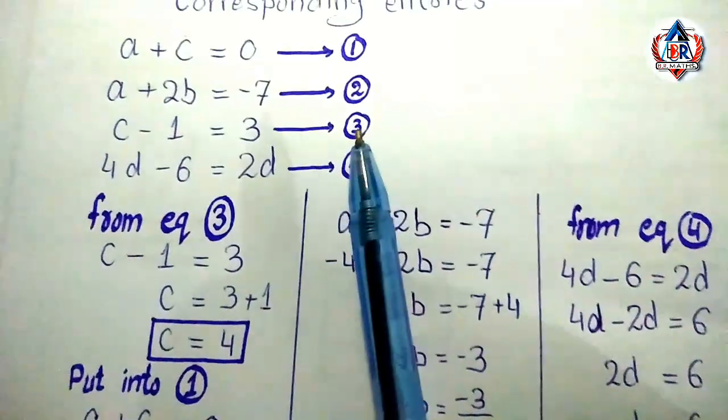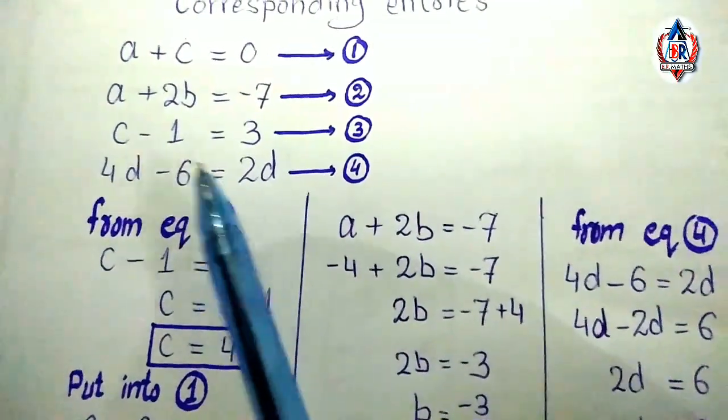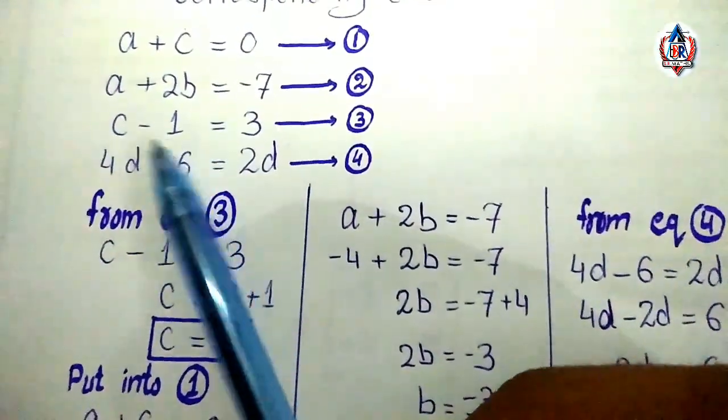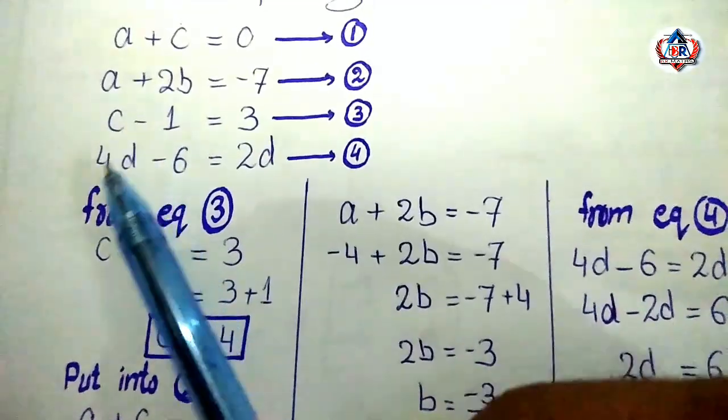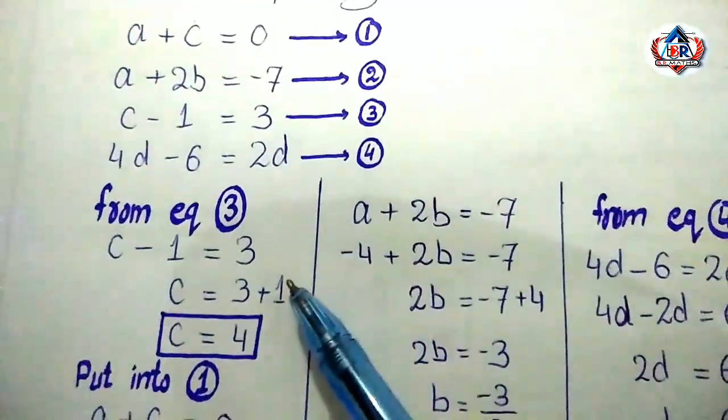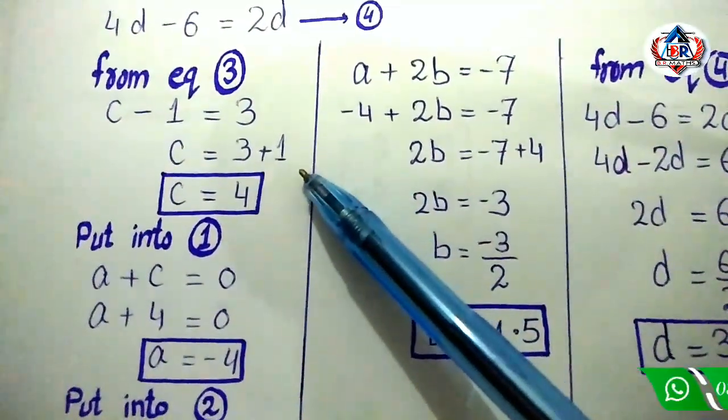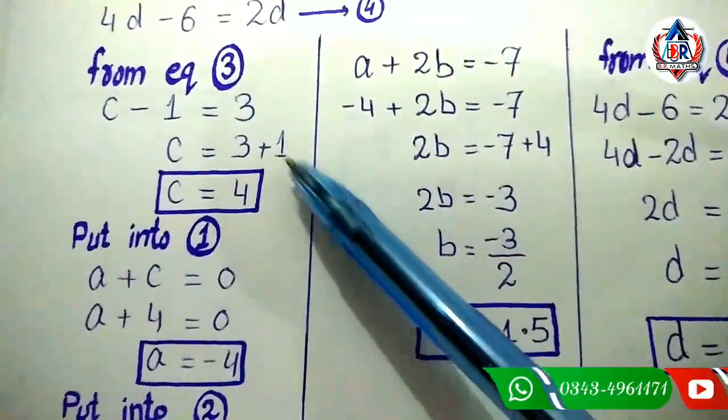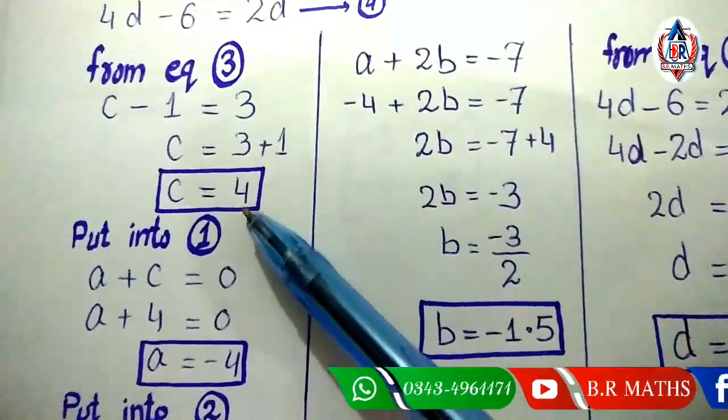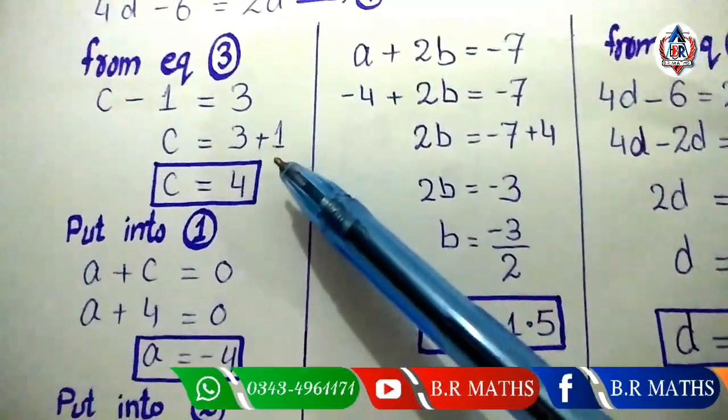So start from equation number 3 because there is only one variable, c. C minus 1 equals 3. Minus 1 becomes plus 1 when moved from left to right, and 3 plus 1 becomes 4. So the value of c is 4.